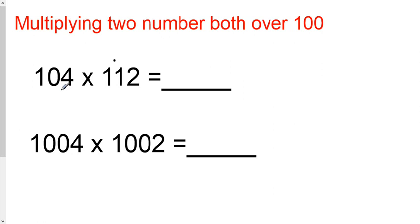I'll be teaching you the multiplying two numbers both over a hundred trick. This problem is set up when you have two numbers that are both a little bit more than a hundred.